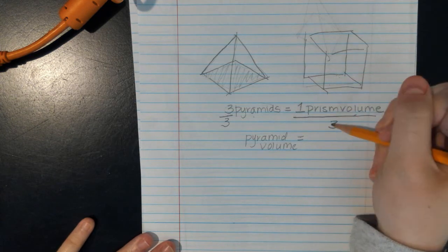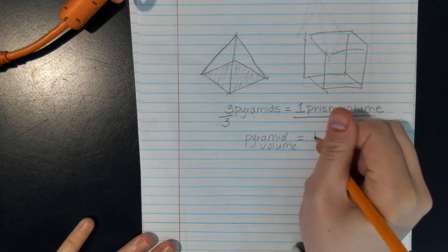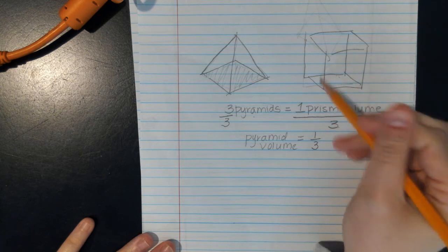Now, if you can see here, right here is one third, okay? So you're going to see on your formula chart, it's one third the volume of the prism.